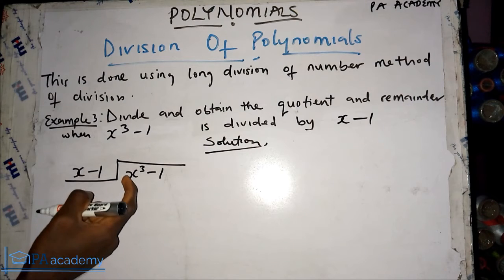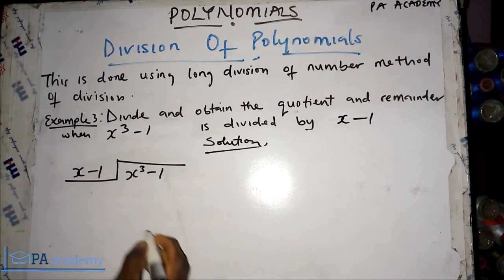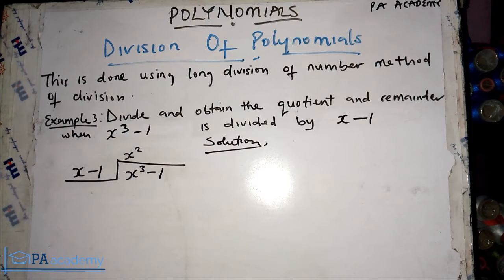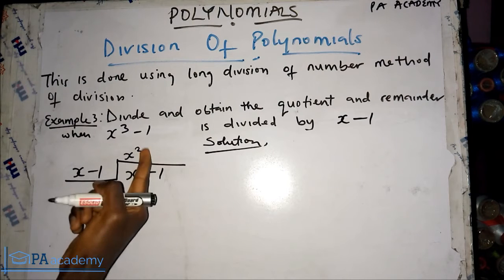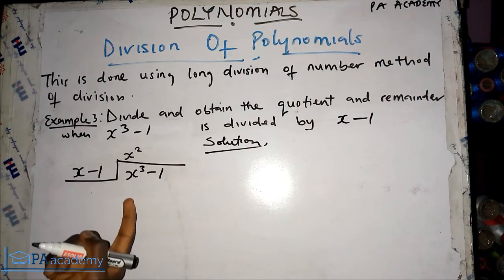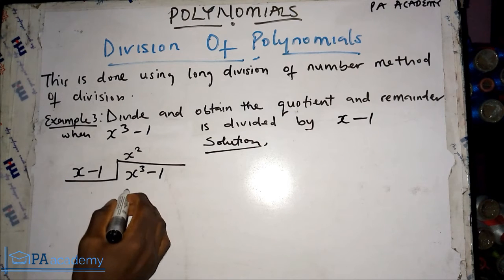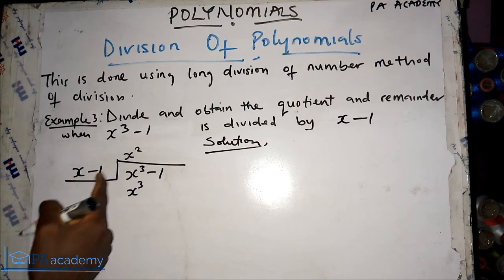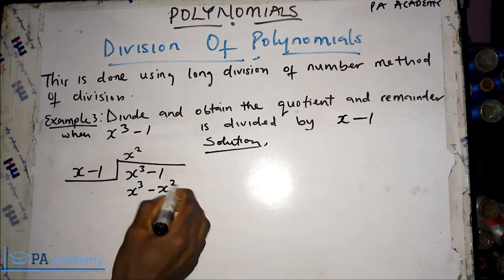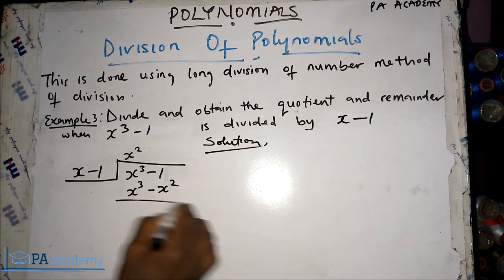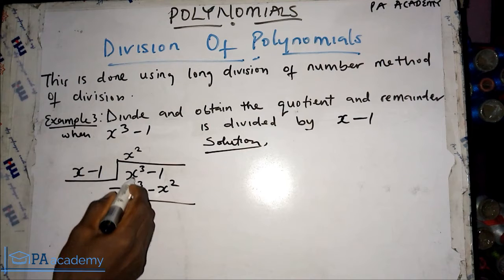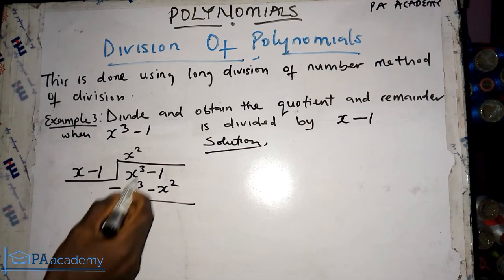We start with x³ divided by x, which gives us x². We use x² to multiply the divisor polynomial: x² multiplied by x gives x³, and x² multiplied by minus 1 gives minus x². Now let's subtract.